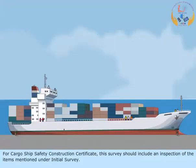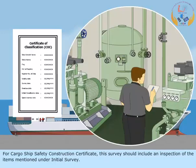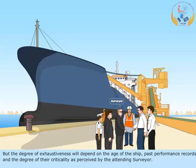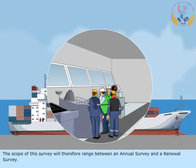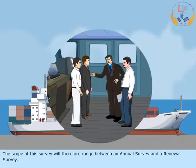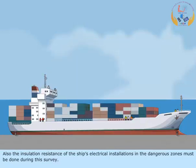For the cargo ship's safety construction certificate, the survey should include an inspection of the items mentioned under the initial survey. But the degree of exhaustiveness will depend on the age of the ship, past performance records and the degree of their criticality as perceived by the attending surveyor. The scope of this survey will therefore range between an annual survey and a renewal survey. Also, the insulation resistance of the ship's electrical installations in the dangerous zones must be done during this survey.